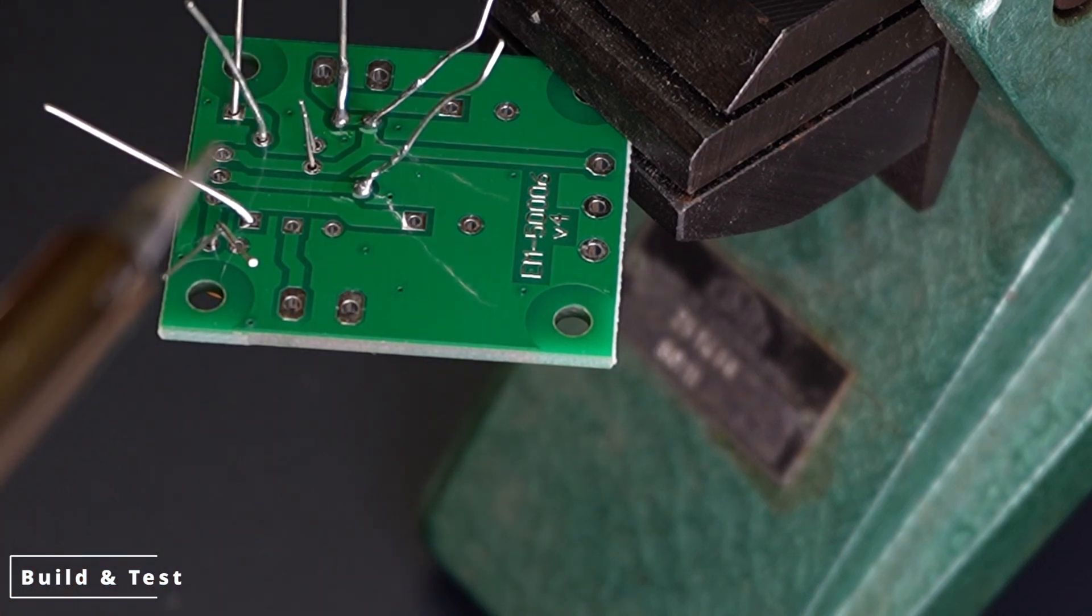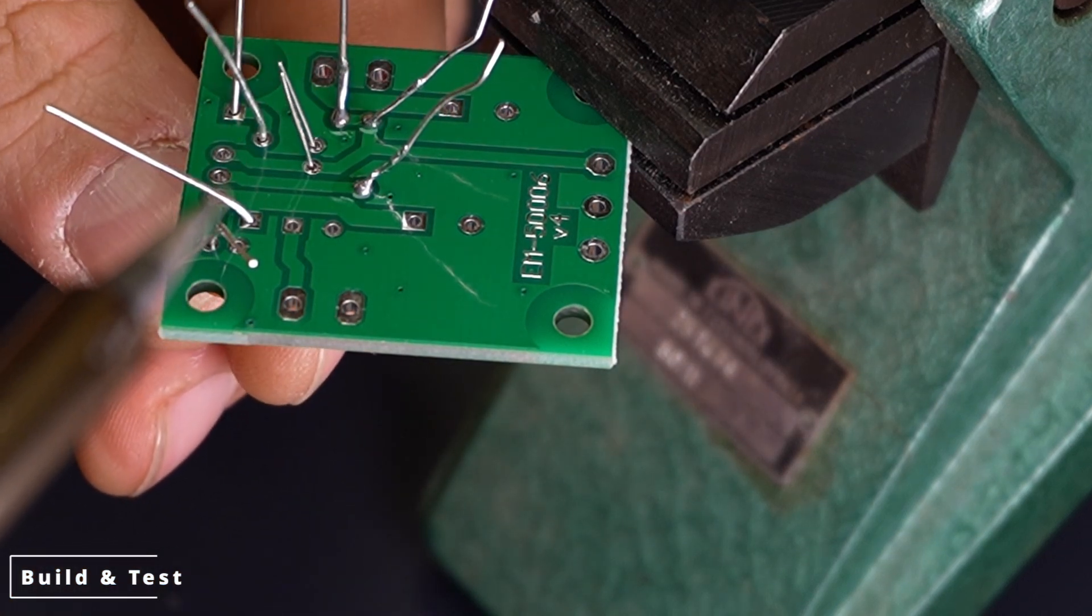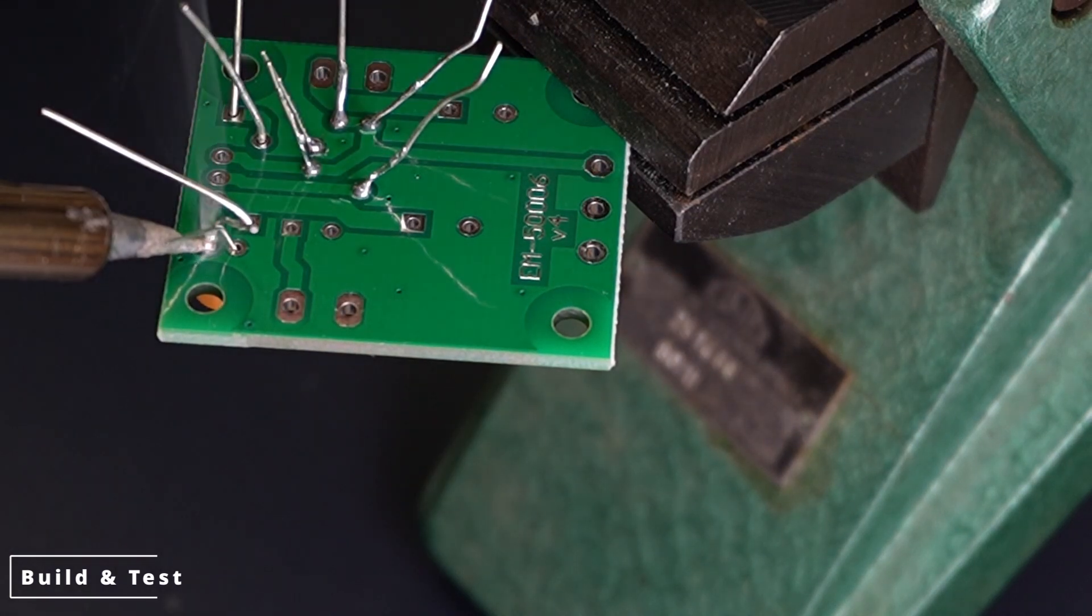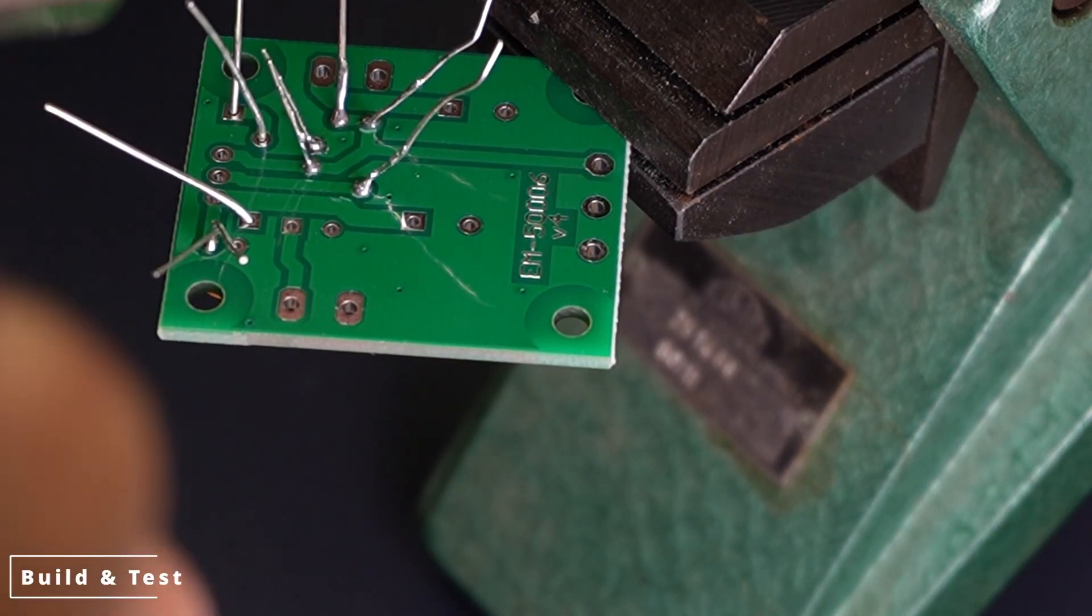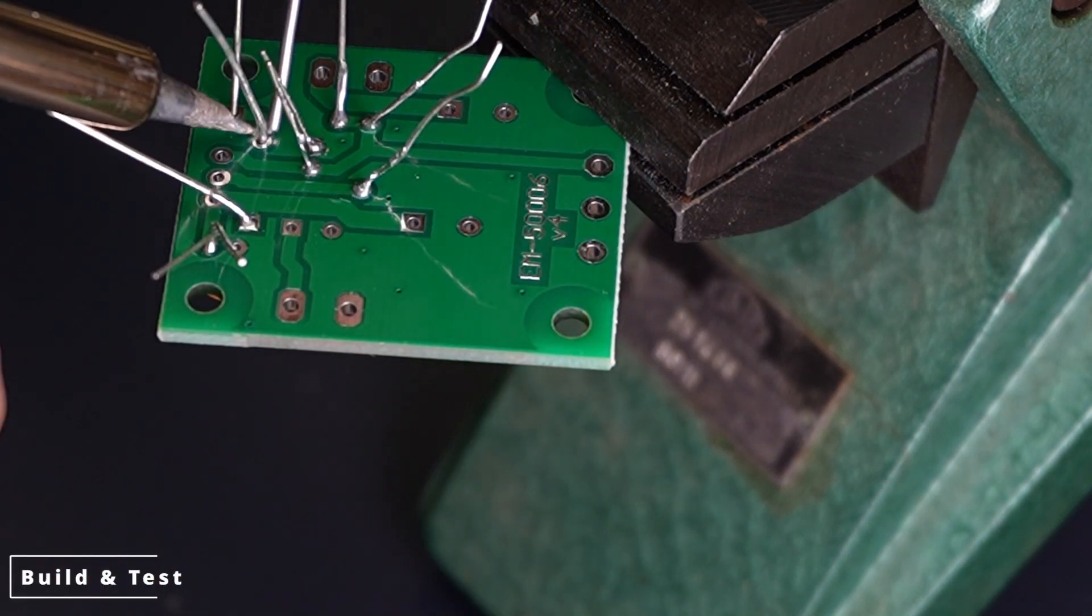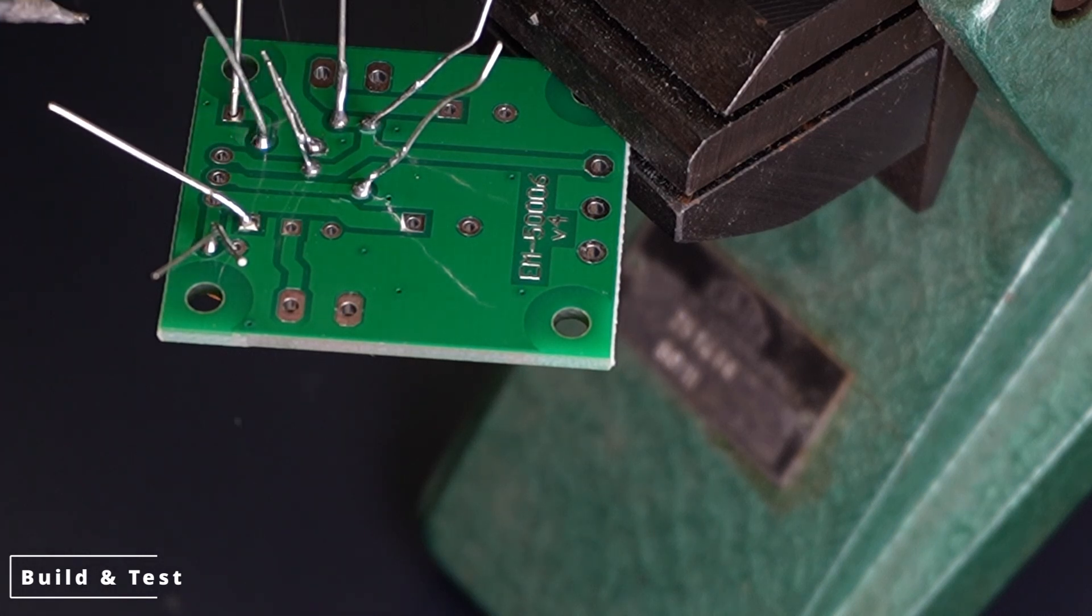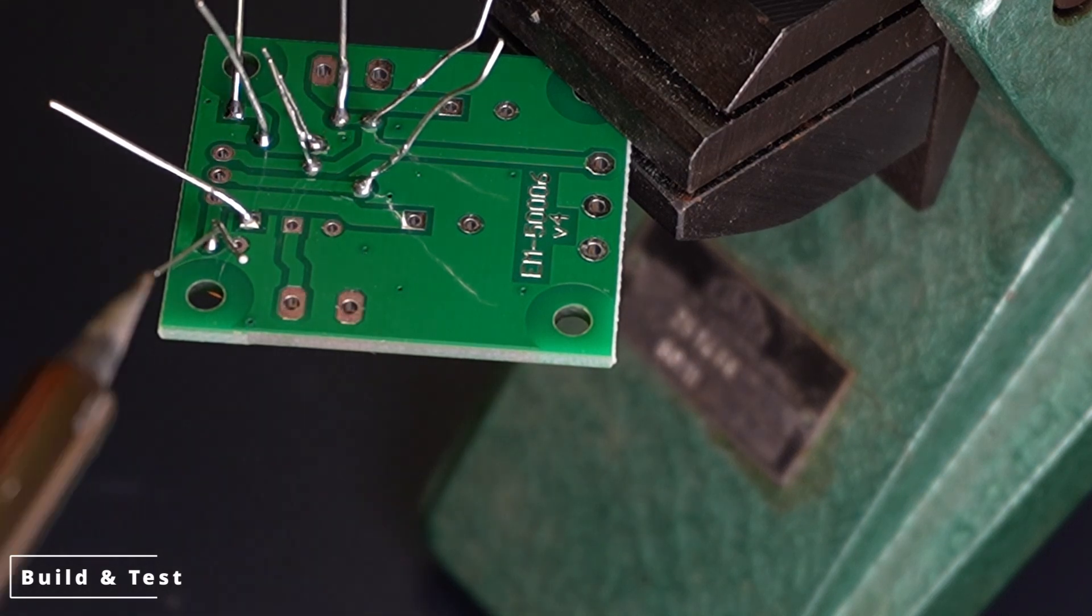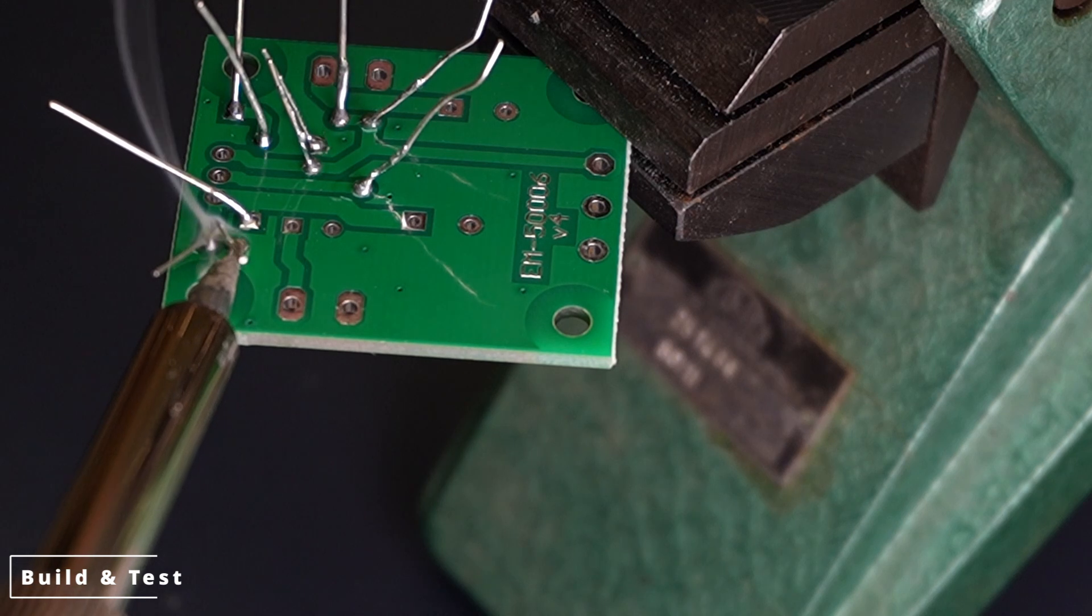Soldering the resistors. The first components to solder are the resistors. Identify them based on their markings and place them in the designated spots on the PCB. After inserting them, slightly bend their leads to keep them in place, then start soldering. Touch the soldering iron to both the lead and the solder pad simultaneously, then add solder. Aim for a clean shiny joint without bubbles or cracks.